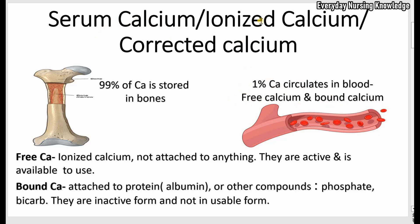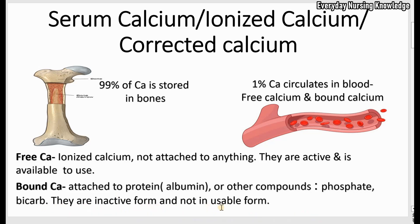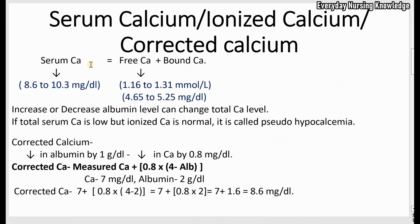Free calcium is called ionized calcium — it is not attached to any compounds, it is active, and it is available for use. Bound calcium is bound to protein, primarily to albumin, and to other compounds such as phosphate and bicarbonate. Bound calcium is in an inactive, non-usable form. When we measure serum calcium, it measures both free calcium (ionized calcium) and bound calcium.